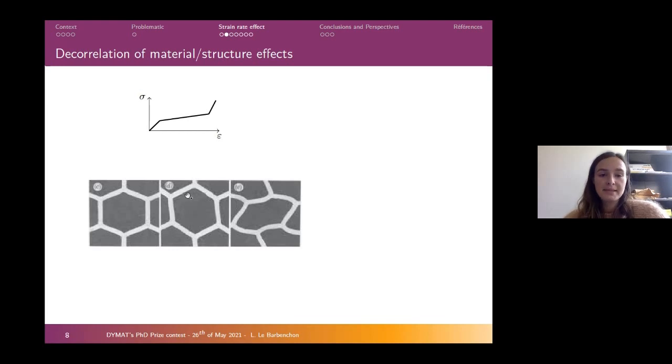As you can see, this is the typical behavior of cellular materials with three phases: the elastic part, then the plateau, and the densification. The plateau appears when we have instabilities appearing at the microscopic scale. Until then, we can make the hypothesis that only the material influences the mechanical behavior.